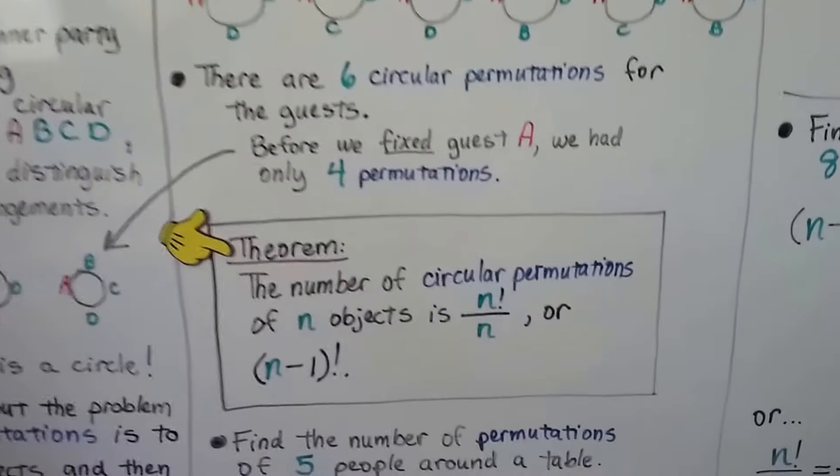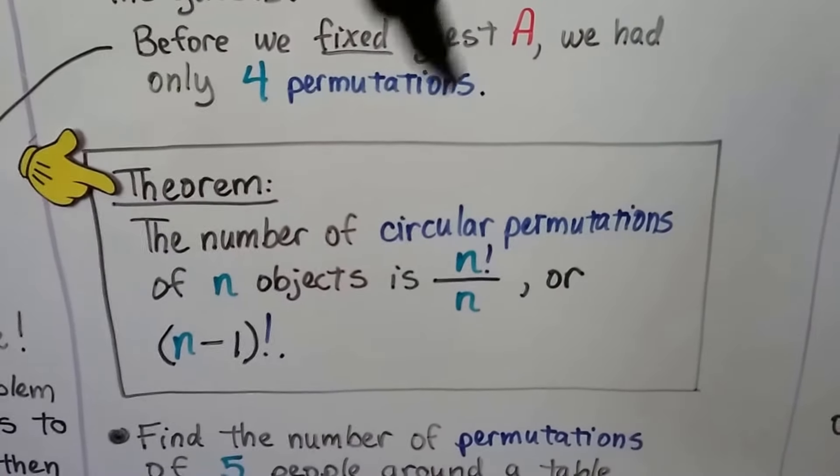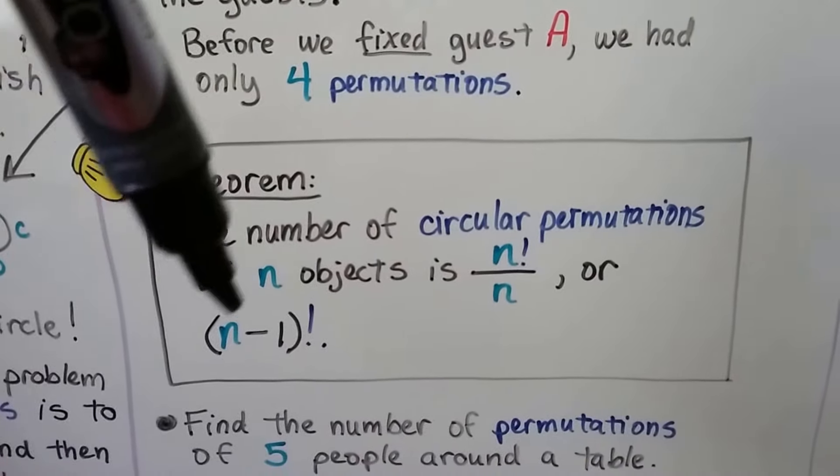Here's our theorem. The number of circular permutations of n objects is n factorial over n, or we could say (n-1) factorial.